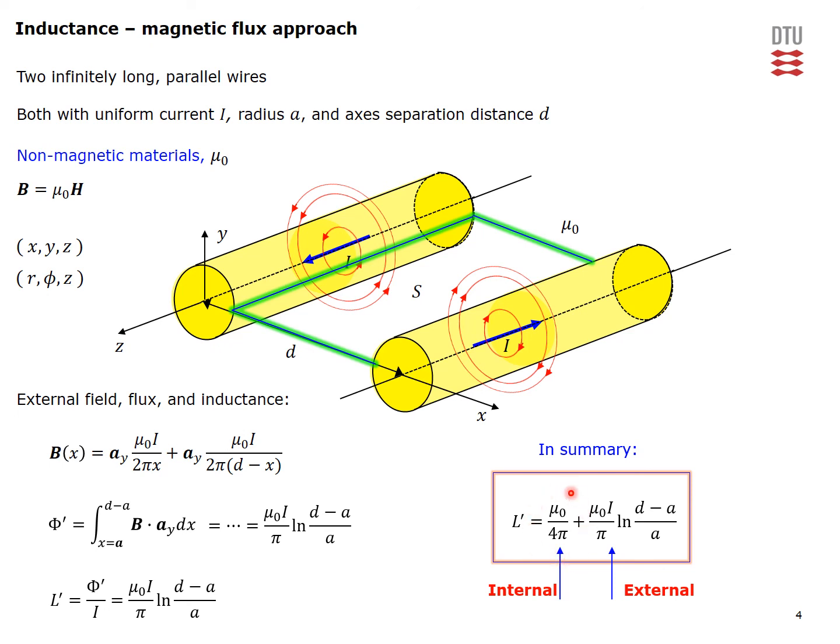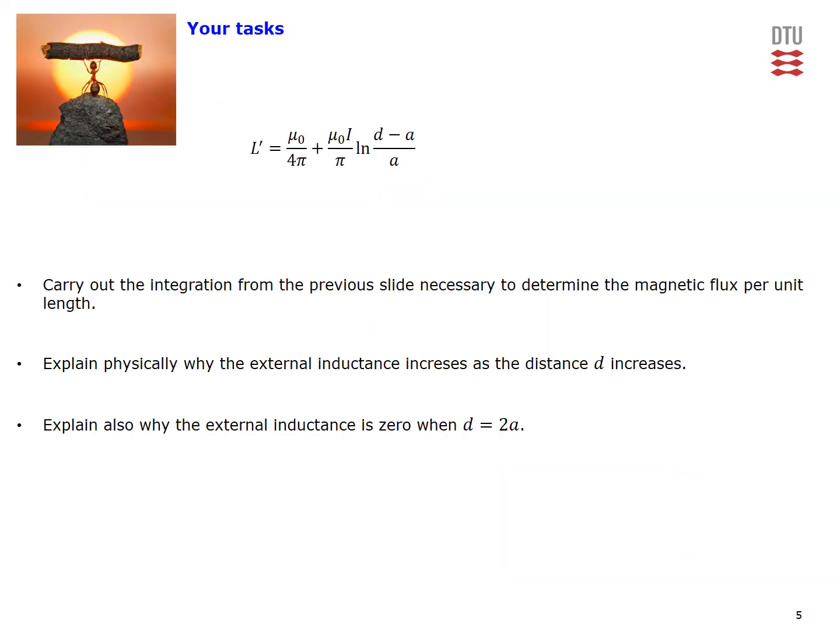In summary we obtain the total inductance of our two wire transmission line which is composed of two contributions: the internal inductance and the external inductance. This essentially brings us to the end of this video problem.